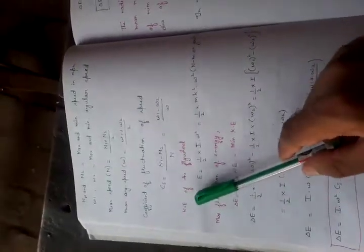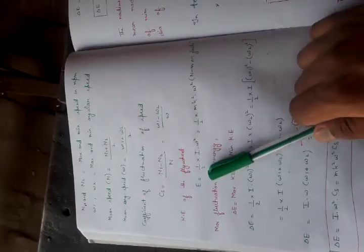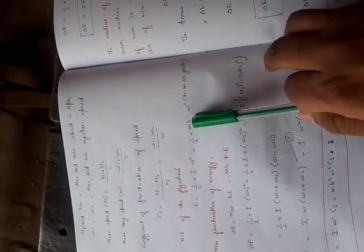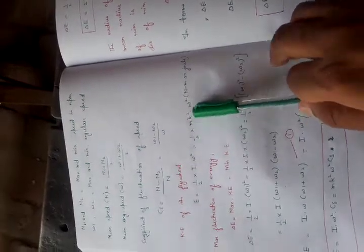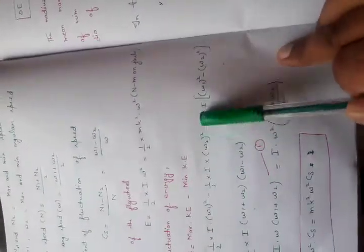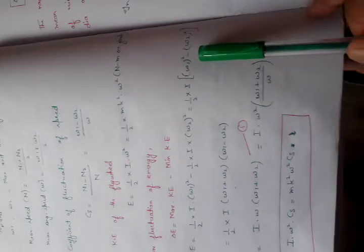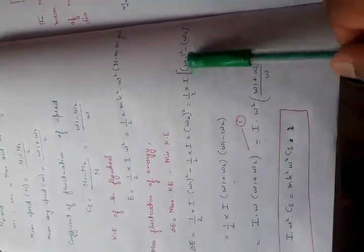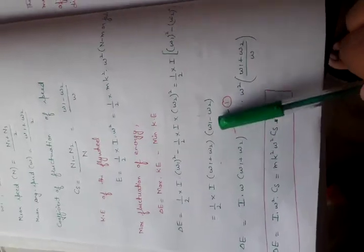Energy of the flywheel is equal to 1 by 2 I omega square. Maximum fluctuation of energy is maximum kinetic energy minus minimum kinetic energy: I omega 1 square minus I omega 2 square. Here I will take common, so we get I times omega 1 square minus omega 2 square, which is omega 1 plus omega 2 times omega 1 minus omega 2.